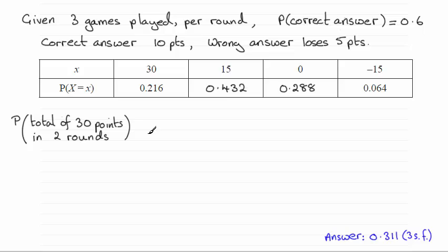So what we need to do is think about how we can get those 30 points in the two rounds. For instance, you could get 30 points in the first round followed by no points in the second round, or you could get no points in the first round followed by 30 points in the second round. And there's one other way and that would be 15 points in the first round and another 15 points in the second round.